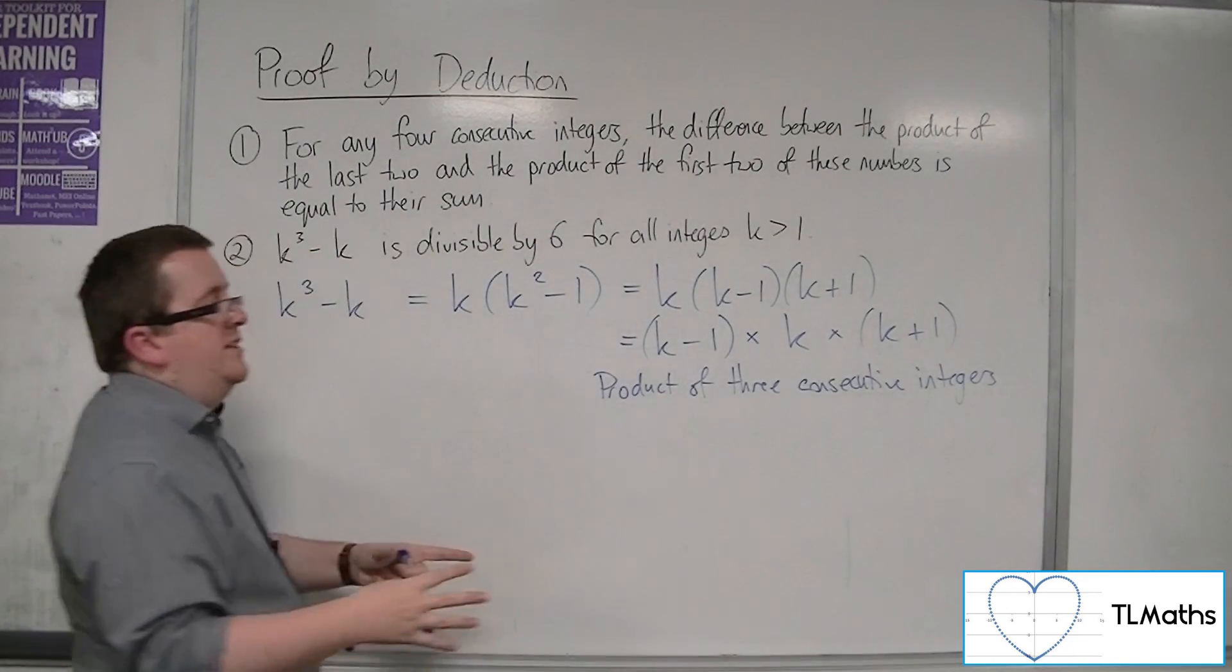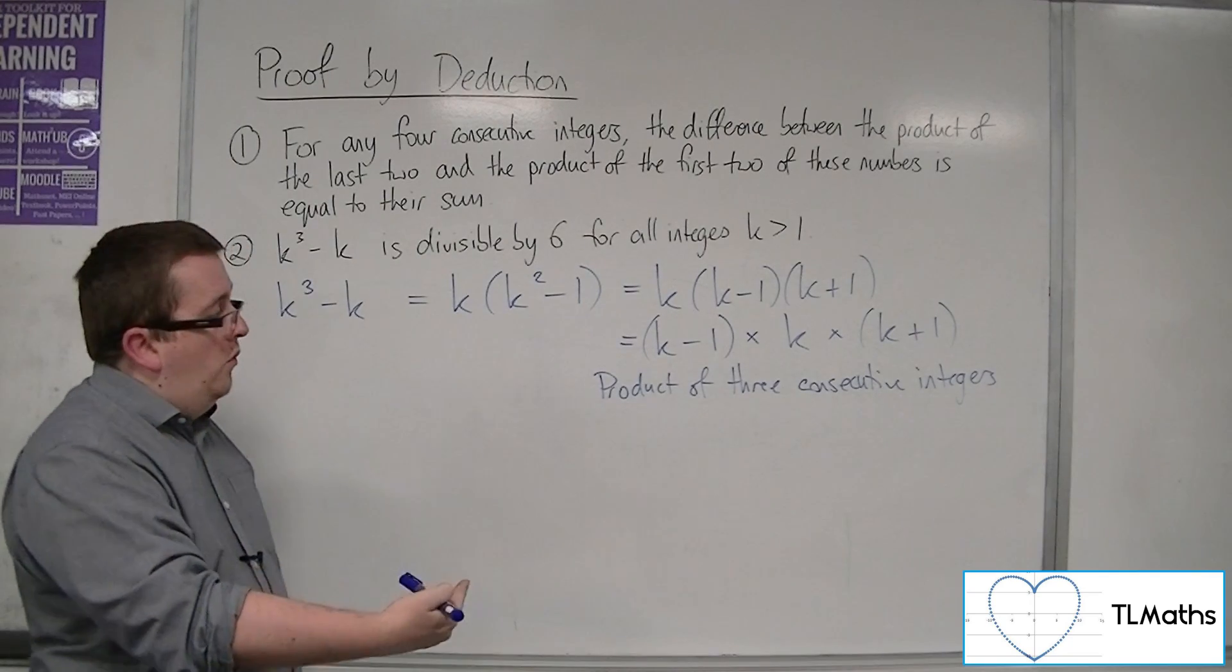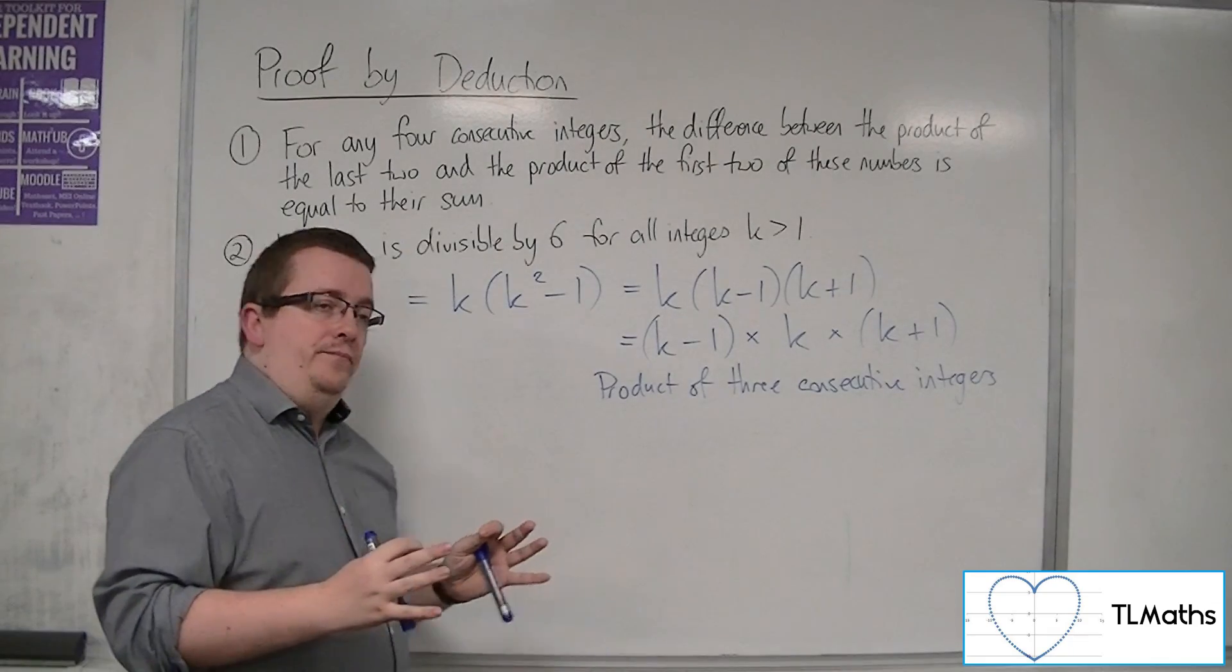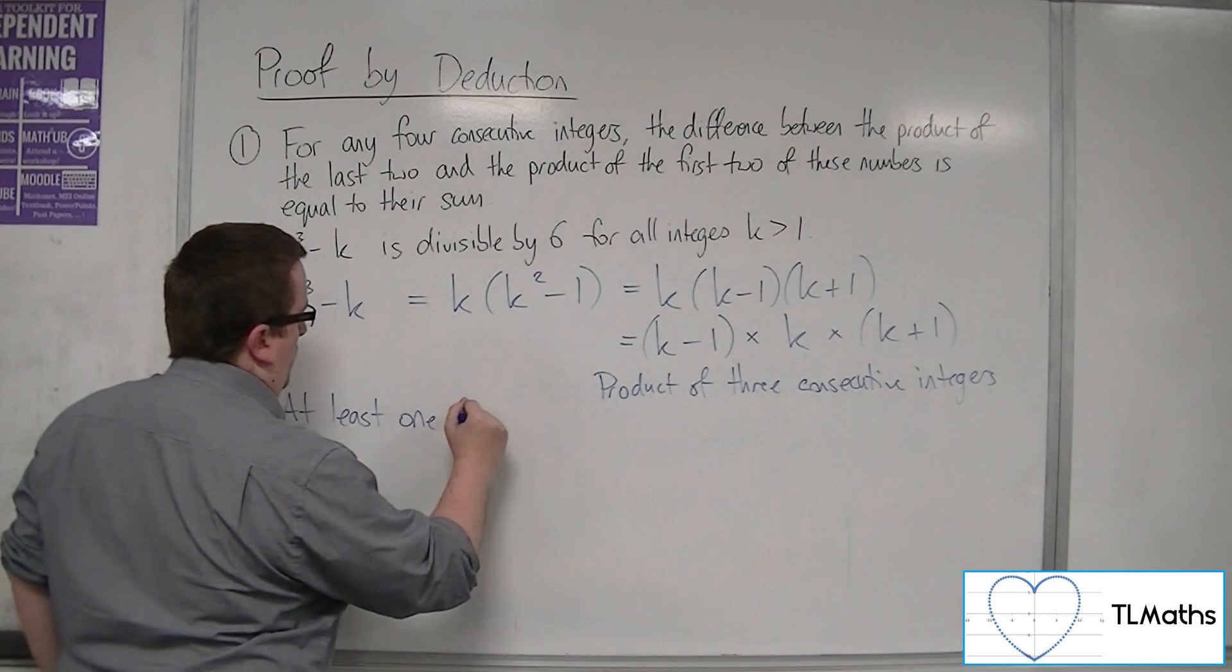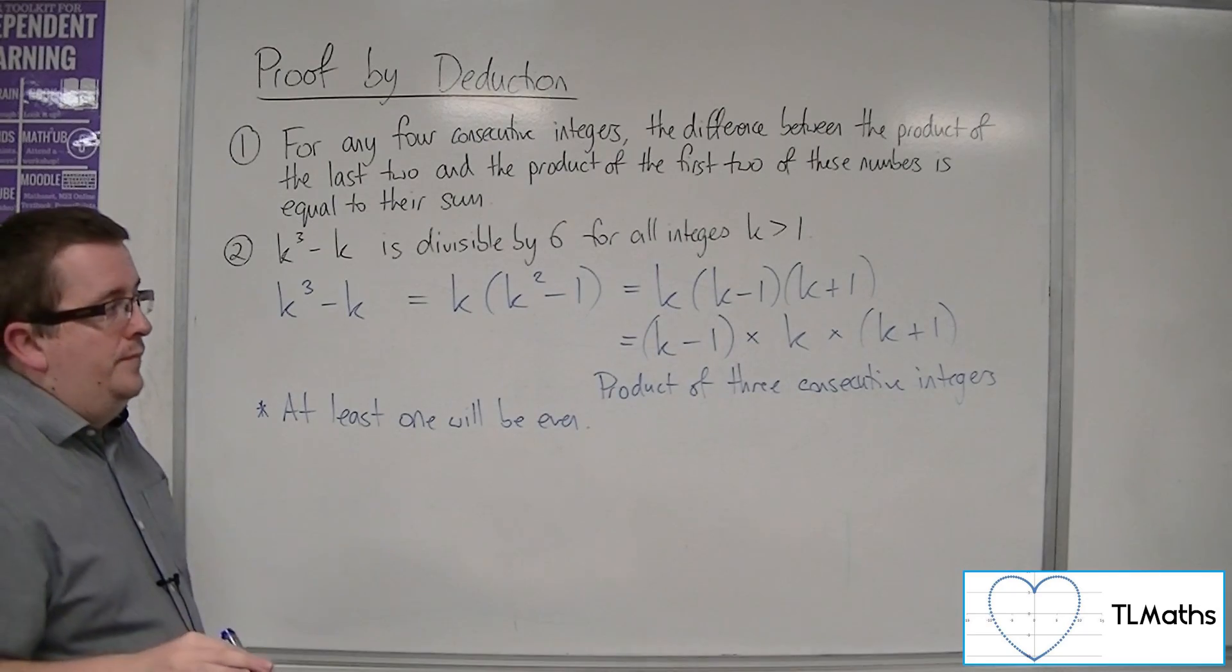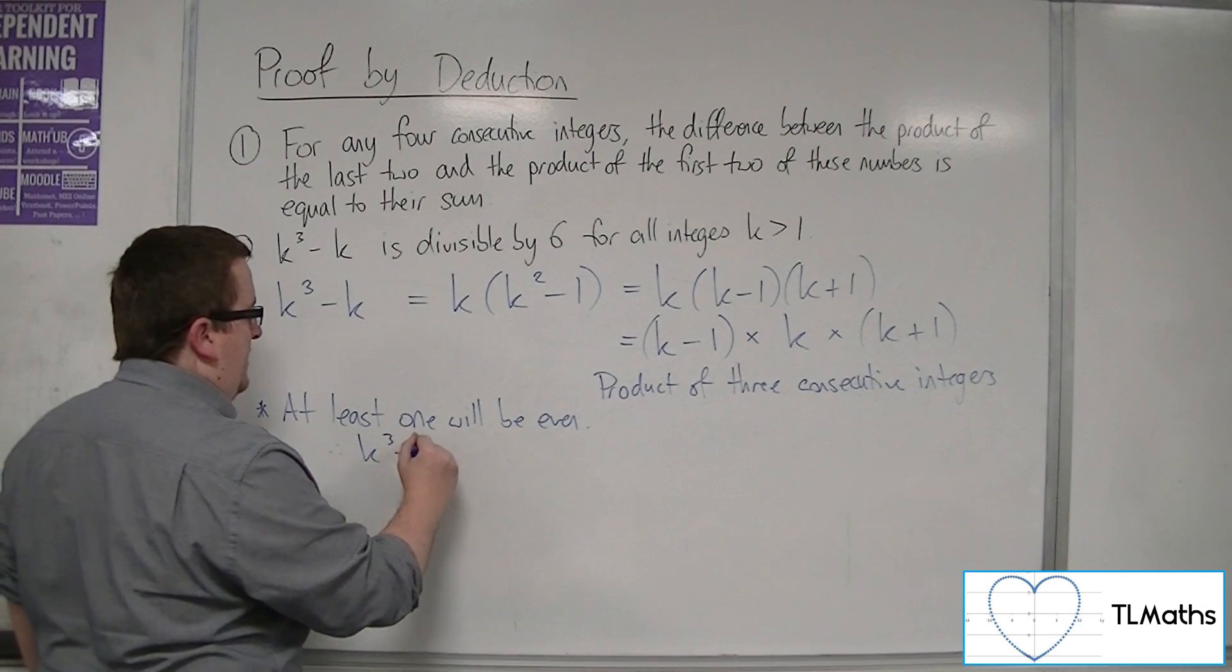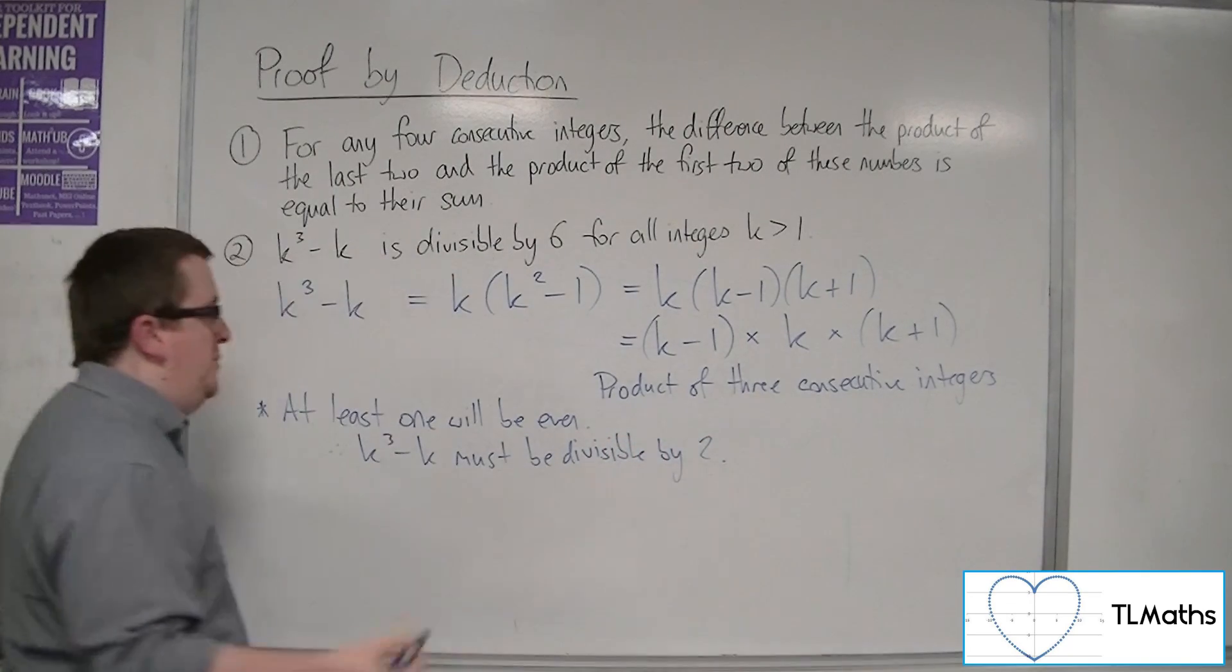Now, if we've got 3 consecutive integers, then we've either got even, odd, even, or odd, even, odd. In either case, at least one of them, of those three integers, will be even. So, at least one will be even. So if at least one of them is even, then that means the whole thing must have a factor of 2. So therefore, k cubed minus k must be divisible by 2. It must have 2 as a factor.